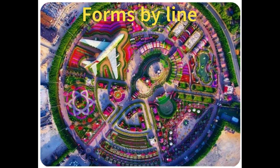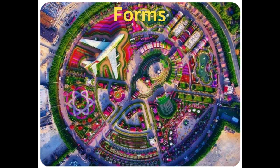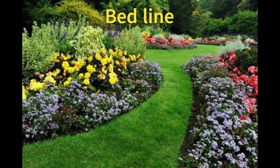Lines create forms in landscape. They are bed lines, plant lines, and hardscape lines. Bed lines are created where the edge of the plant bed meets another surface material, such as turf, ground cover, etc.